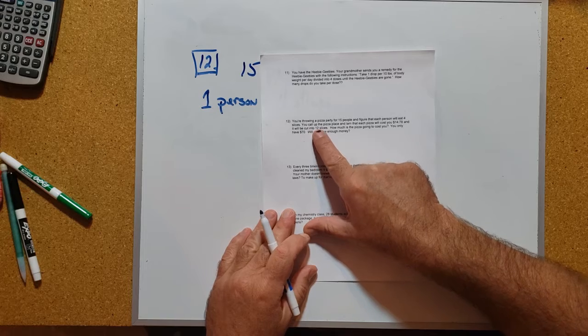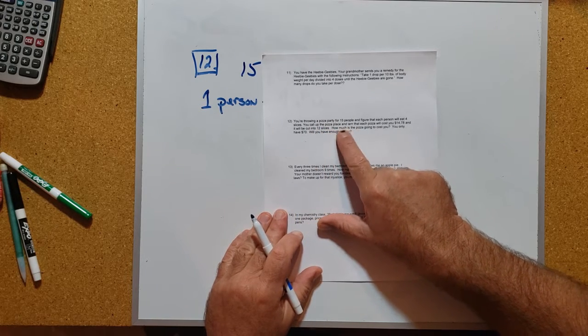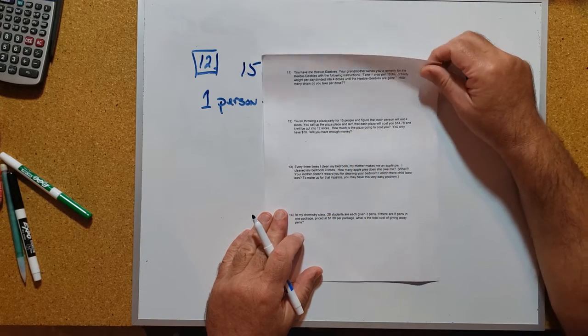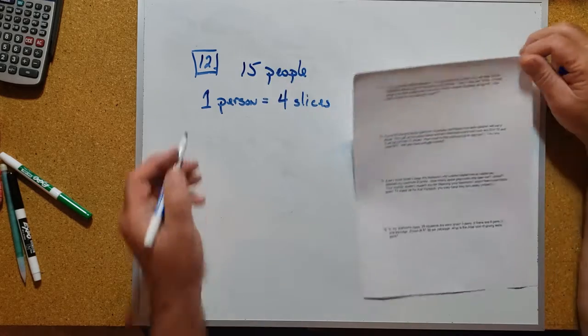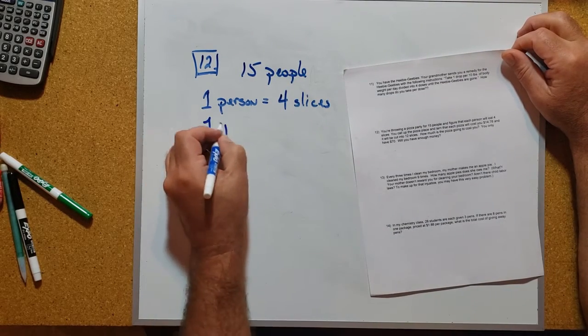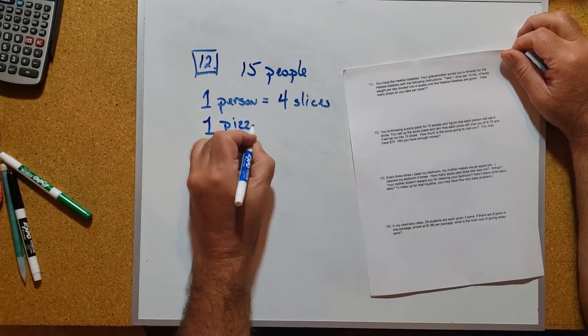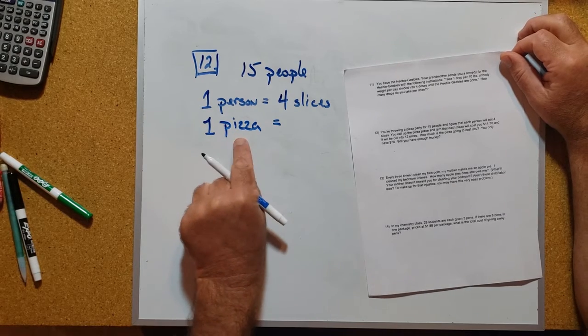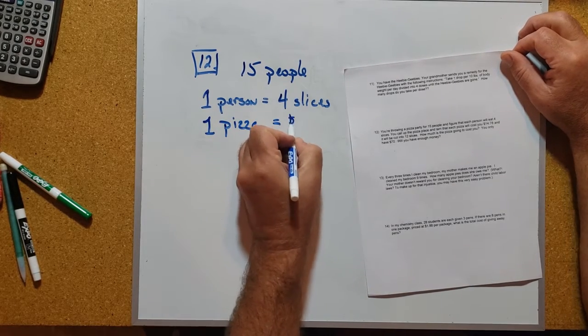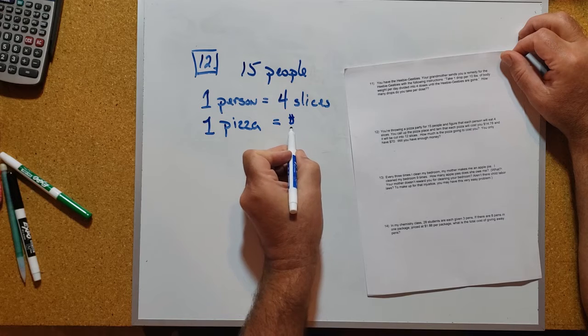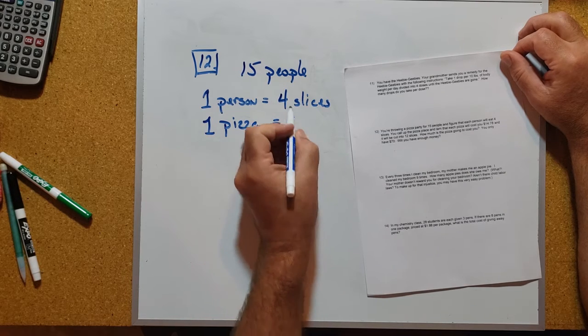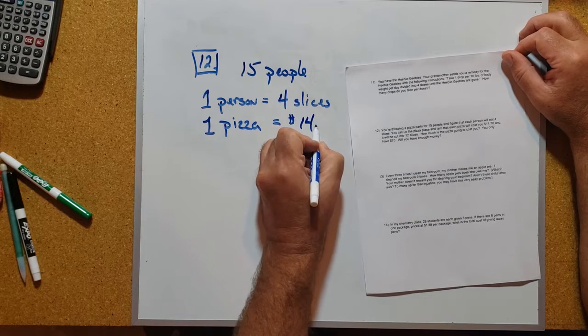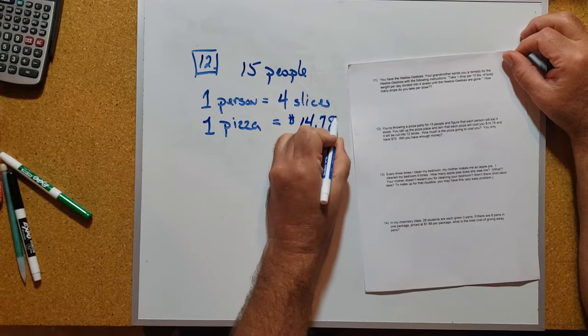Let's keep going. You call up the pizza place and learn that each pizza will cost you $14.78. So that gives us another conversion - each pizza I buy is going to cost me $14.78.